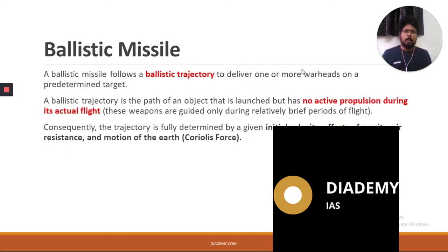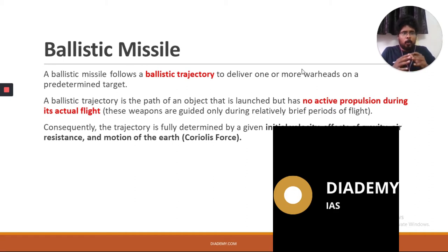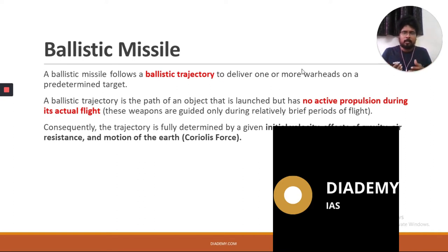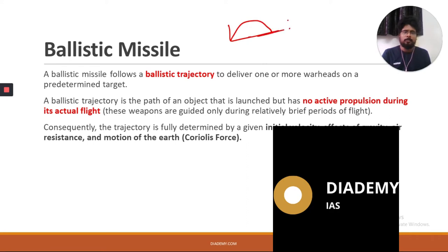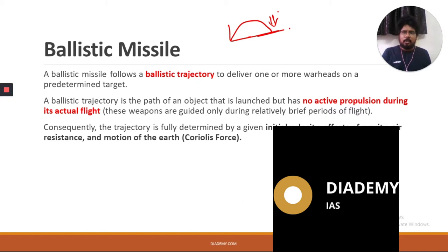What is a ballistic missile? A ballistic missile is something which follows projectile motion. Most of us have read about projectile motion in school physics. Projectile motion follows a curved trajectory, and this is exactly the path — the ballistic trajectory — that a ballistic missile follows to deliver one or more warheads on a predetermined target.